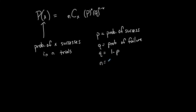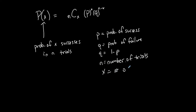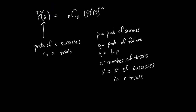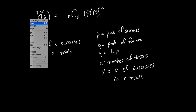n is your number of trials, and x represents the number of successes in those n trials. You'll typically hear this stated as the probability of exactly x successes in n trials. I'll show you how to use this formula and then the calculator trick.